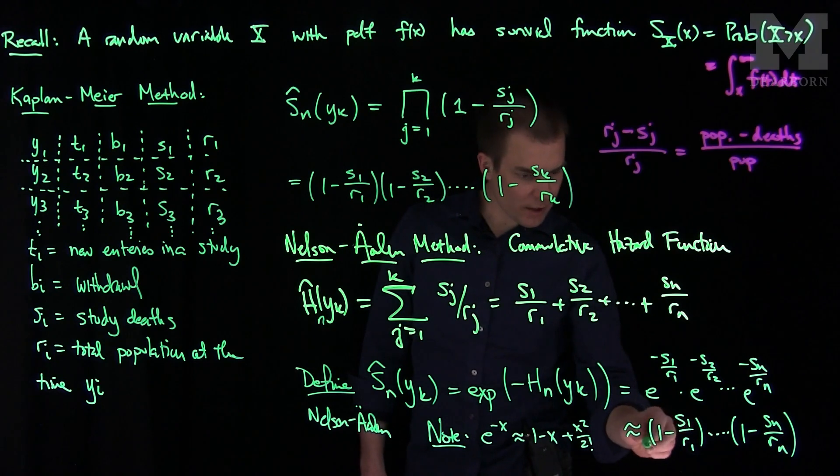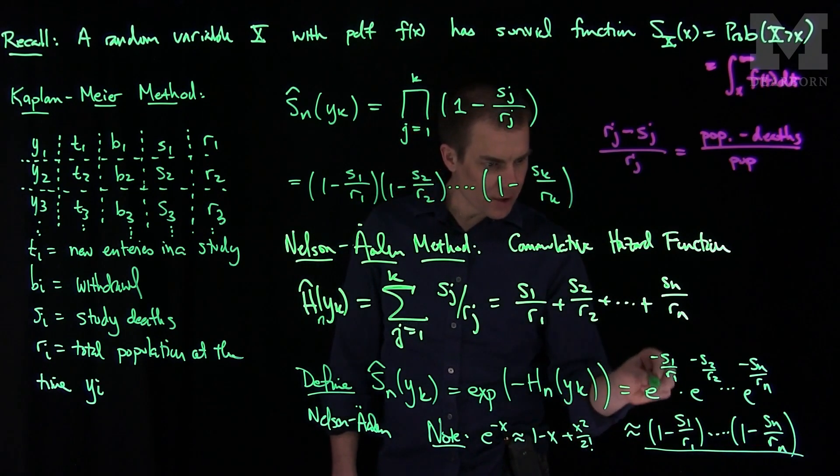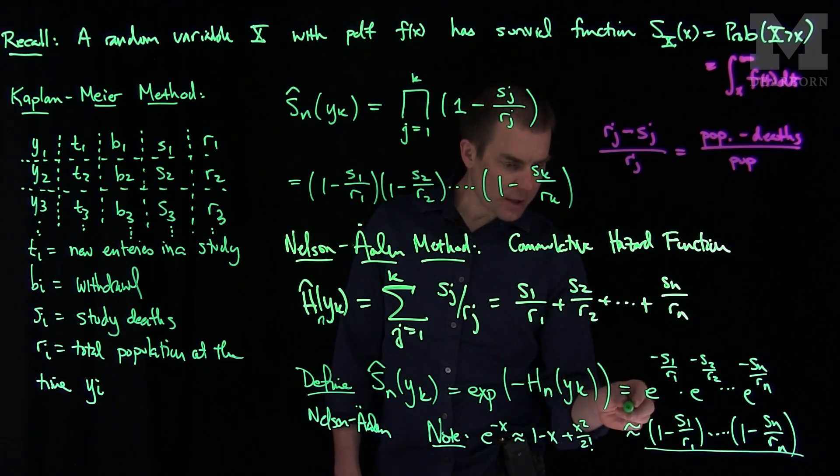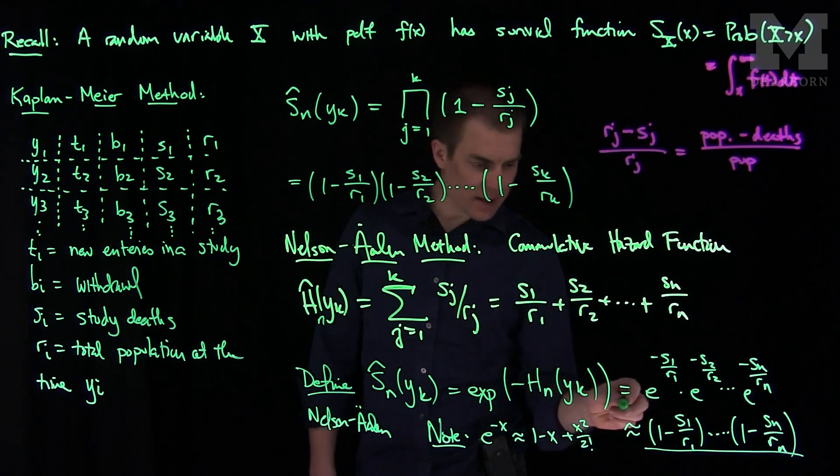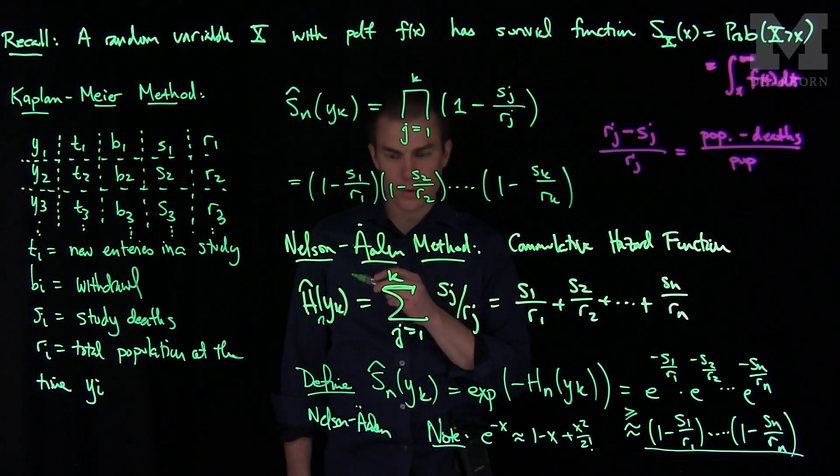But these terms on the approximate side, these terms on the upper side, the pure exponentials, are actually a little bit larger than this. So these terms in the Nelson-Aalen estimate for the survival function are always bigger than or equal to the Kaplan-Meier.